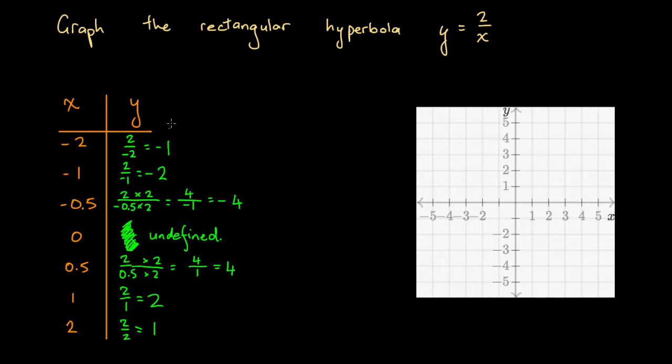So we've got a few coordinate points here that we can plot, and let's go about plotting them. We'll plot them in orange. So at x equals minus 2, we've got y equals minus 1. So it's going to be 2 units left of the origin and 1 unit down. So we're going to have a point here.